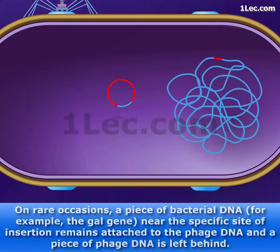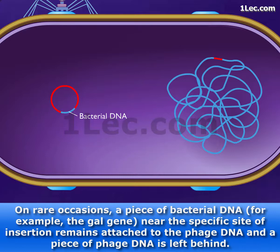On rare occasions, a piece of bacterial DNA — for example, the gal gene — near the specific site of insertion remains attached to the phage DNA, and a piece of phage DNA is left behind.